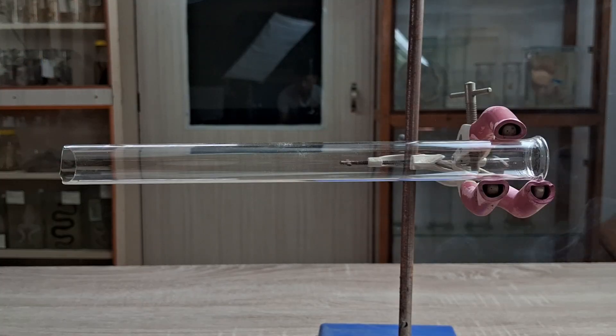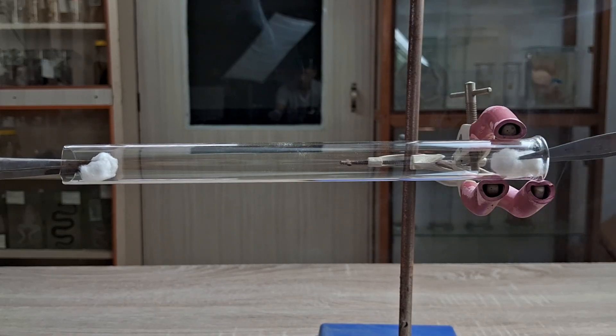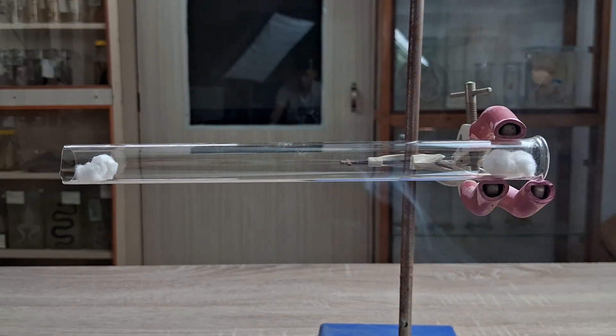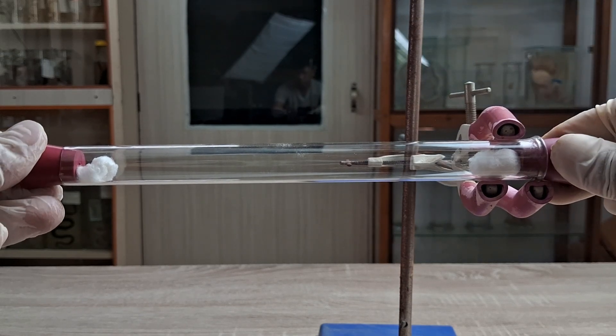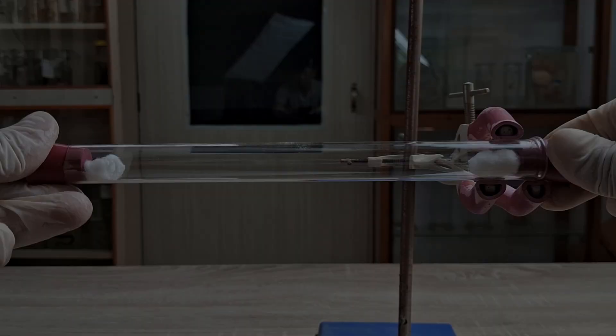Introduce the two cotton balls, one on each end of the glass tube, at the same time. Stopper the open ends of the tube with the rubber corks, also at the same time. Allow the setup to remain undisturbed and observe closely.